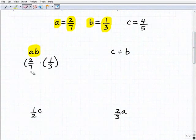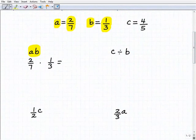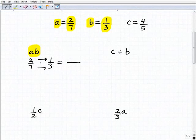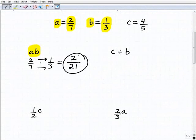But a times b, given these particular values, means two sevenths times one third. So let's go ahead and drop the parentheses now, and this just turns into a basic fraction problem. We're going to multiply the numerators and the denominators. So two times one is two, and seven times three is 21. And that's as simple as it's going to get. So ab is equal to two over 21.